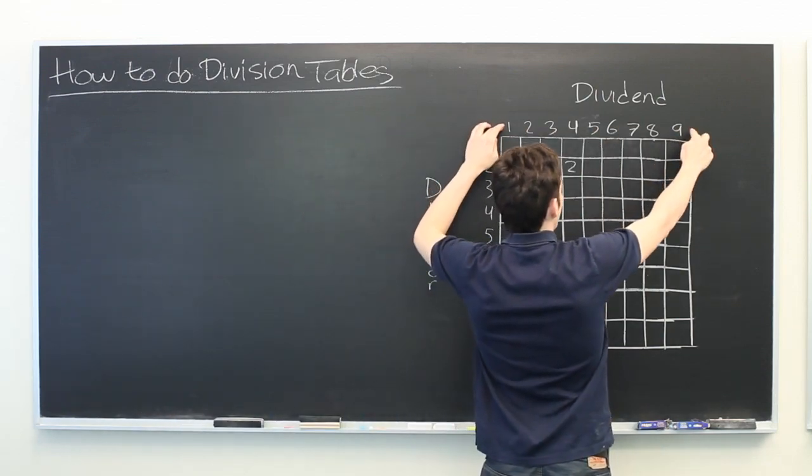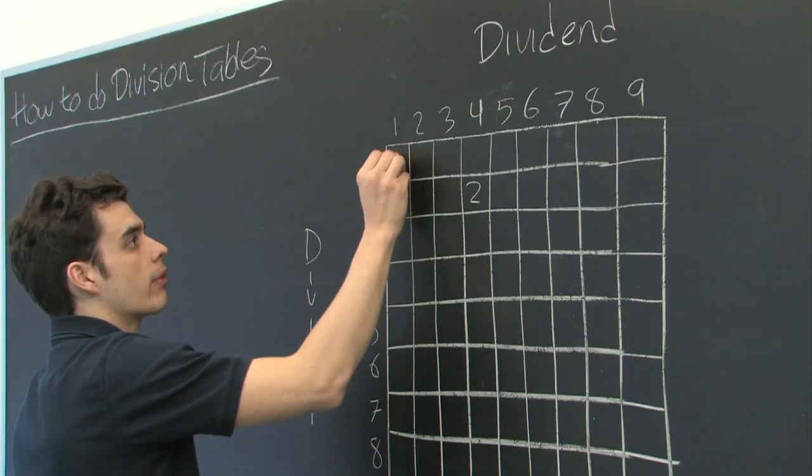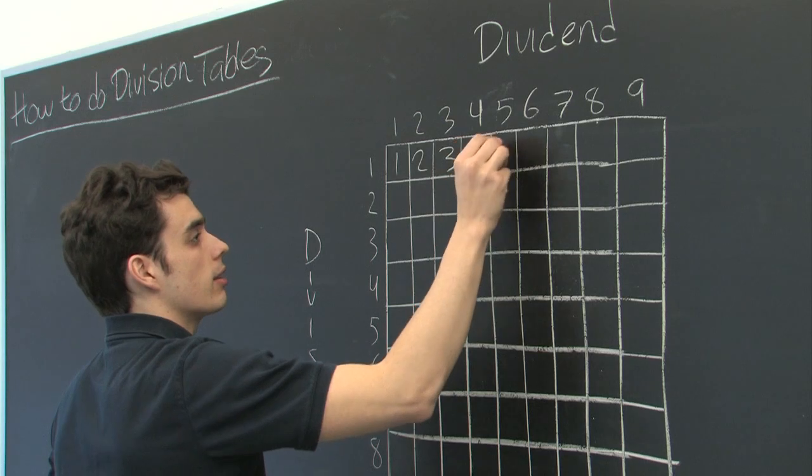First off, any number divided by one will give the original number again. So we can simply fill in this row like this.